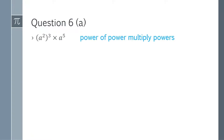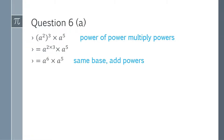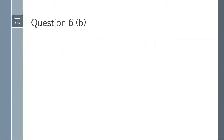Question 6a is: a squared, power 3, multiplied by a power 5. We will expand this and apply the rule of indices — power of power — so it becomes a to the power 2 multiplied by 3, giving a⁶ multiplied by a⁵. We have the same base, so we add the powers: a to the power 6 plus 5, which equals a¹¹. That is the answer for question 6a.